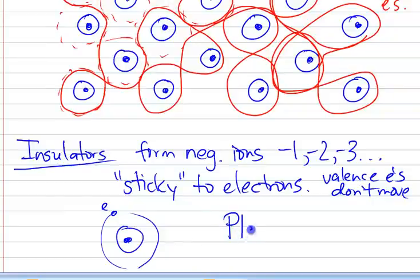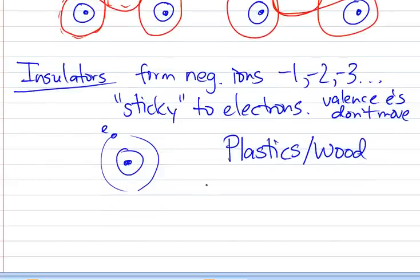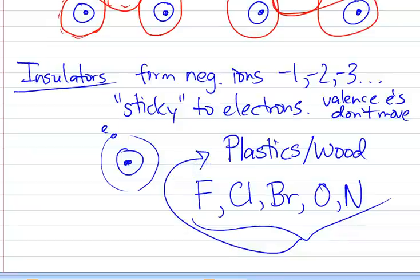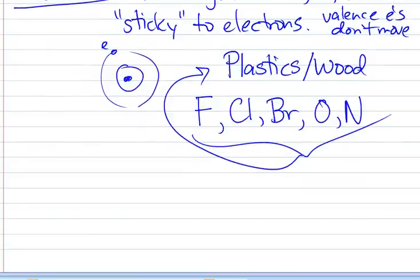Most insulators are plastics or wood or things like that. And if you think about it, what kind of atoms make for good insulators? Well, fluorine, chlorine, see where I'm going with this, bromine, also things like, believe it or not, oxygen and nitrogen. And all these together, when you kind of make compounds out of them, they turn into plastics. And so most insulators are made out of plastics or out of wood.